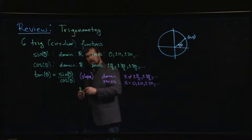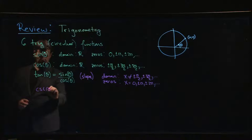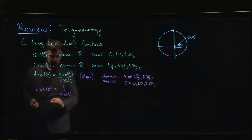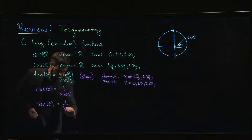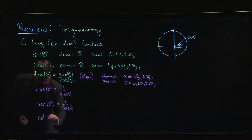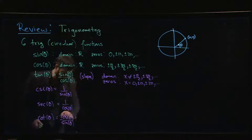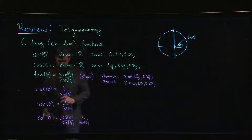Those are the three main trig functions, but you can also look at their reciprocals. There is cosecant theta, which is one over sine theta; secant theta, which is one over cosine theta; and cotangent theta, which is cosine theta over sine theta — the same thing as one over tan theta.